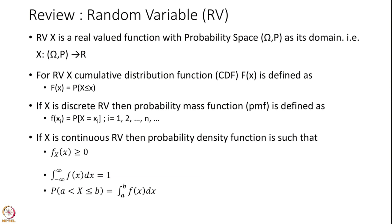If X is a discrete random variable, then we defined a probability mass function, small f of x_i, which equals the probability that random variable X takes on a particular value x_i, where i varies from 1, 2, 3, etc. Please remember it is a discrete random variable and therefore it takes countable values.